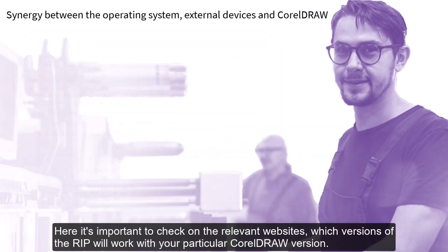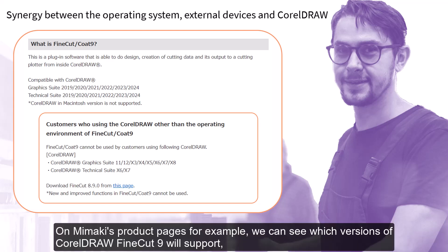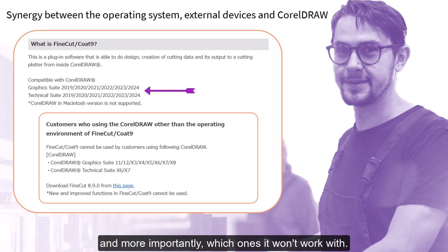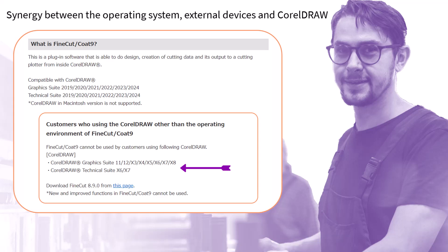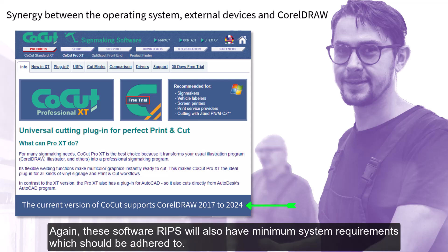RIPs from other manufacturers such as Mimaki's FineCut or Eurosystems' CoCut, on the other hand, build themselves into CorelDraw as additional toolbars. Here it's important to check on the relevant websites which versions of the RIP will work with your particular CorelDraw version. On Mimaki's product pages, for example, we can see which versions of CorelDraw FineCut 9 will support, and more importantly, which ones it won't work with. The same applies for CoCut.